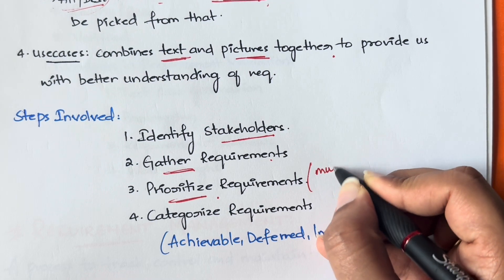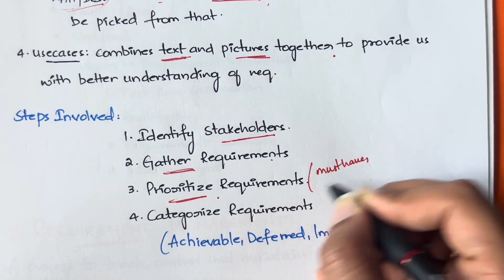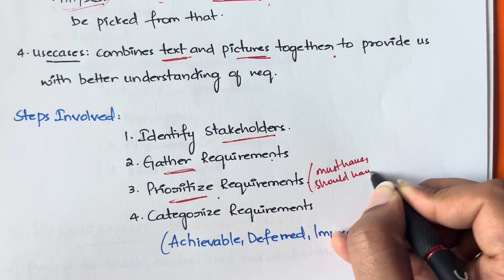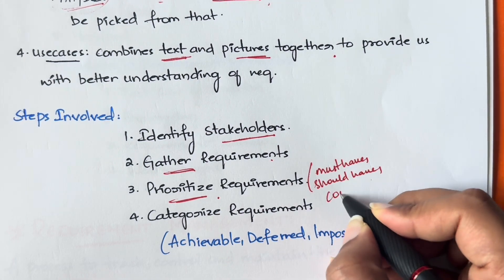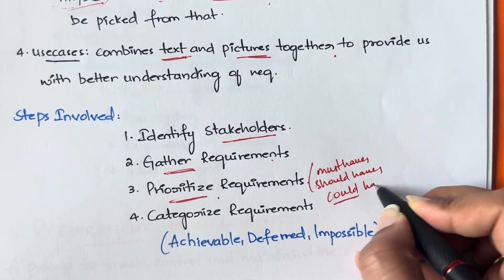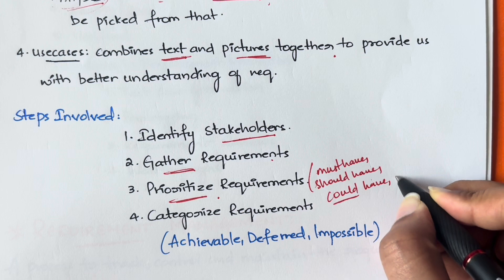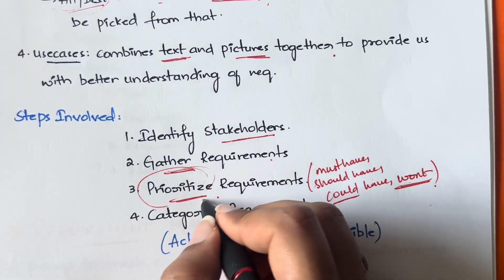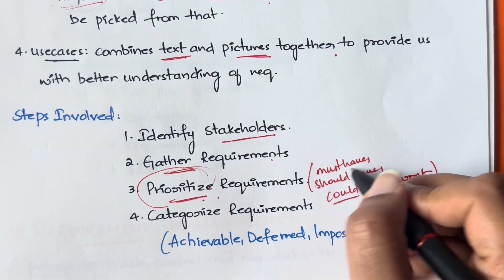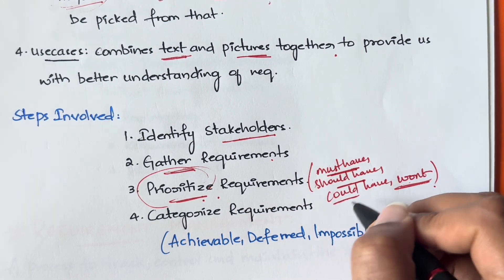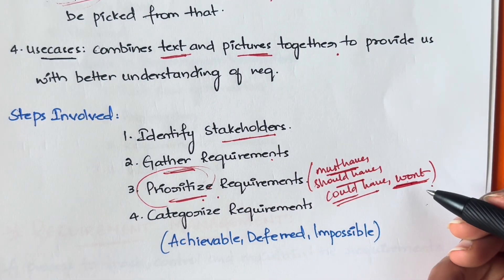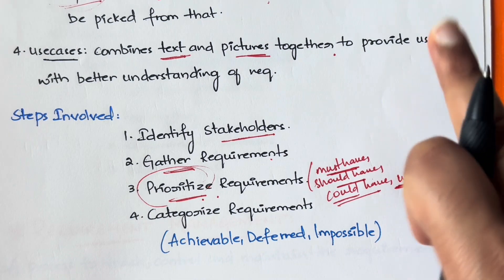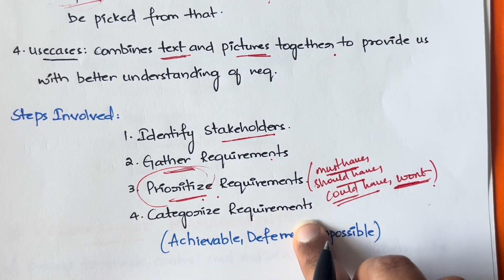After gathering the requirements, you prioritize them. This is like: must have - these are the essential things; should have - these are important but secondary; could have - these are optional; and won't have - these you do not need to implement. You prioritize which requirements are most important, second most important, third, and least important.